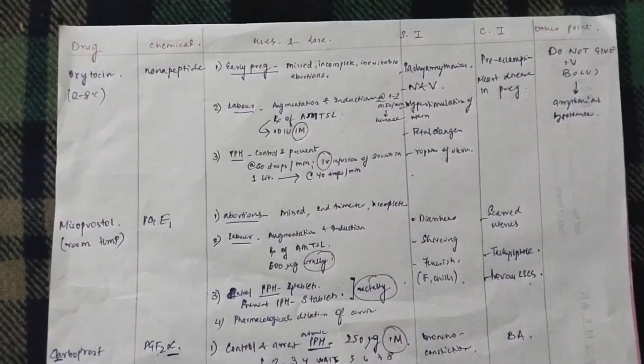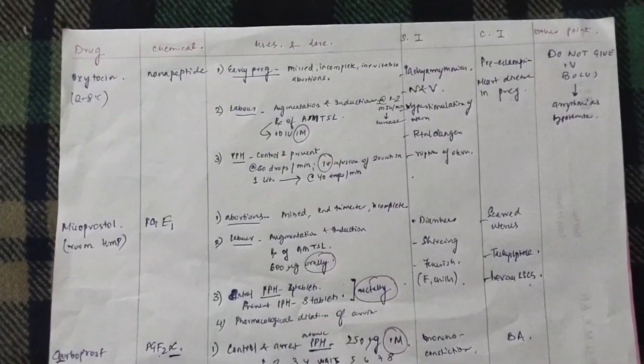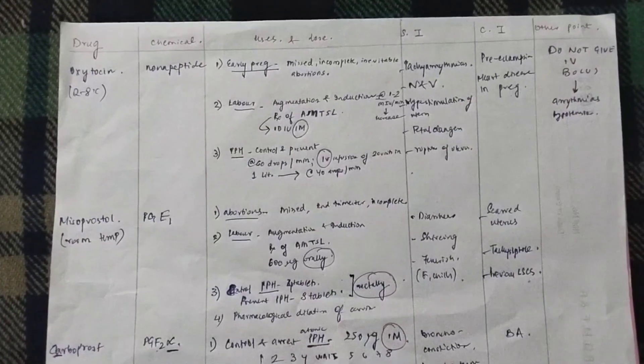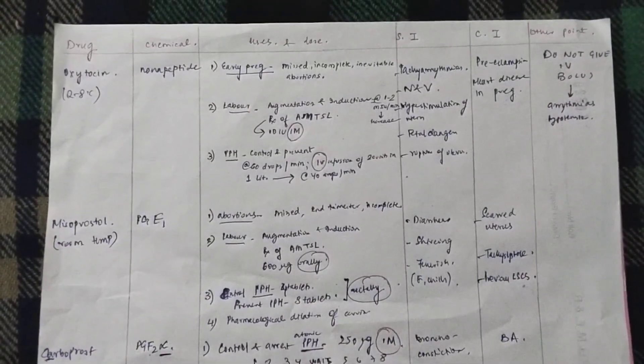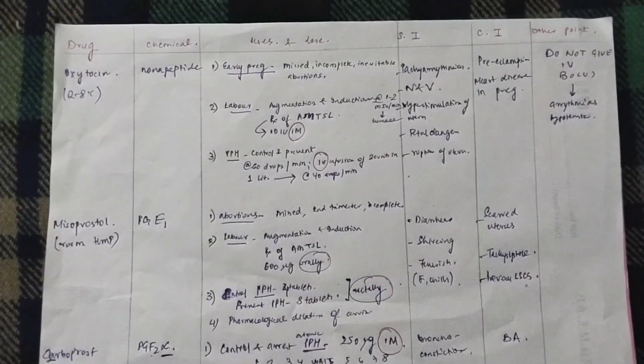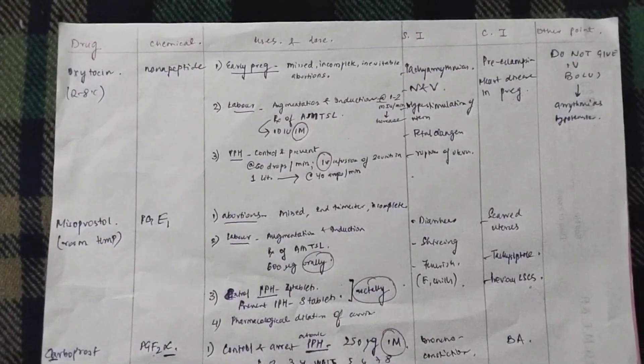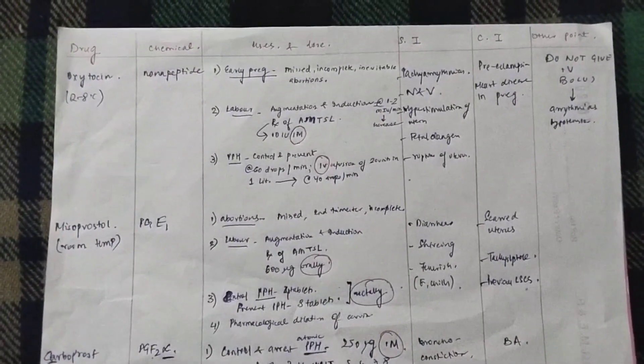While studying, I found that these things are very confusing. One drug can be mistaken for another drug. So, in this video, I have tried to simplify them, presenting them in a format which you will be able to retain longer. First of all, you should know what are the drugs which are commonly asked. There are five drugs.